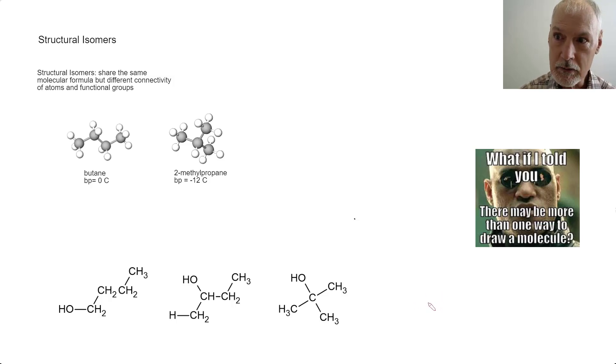That becomes more apparent when one looks at structural isomers. ISO stands for the word same, and MERS is Greek for parts. So we're looking at a family of chemicals that have the same parts, in particular the same molecular formula, but different structures, resulting in different connectivities of atoms and functional groups.